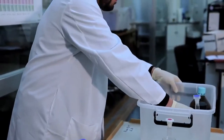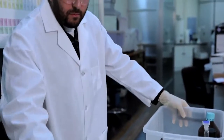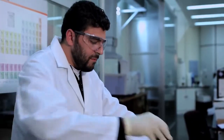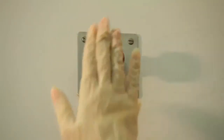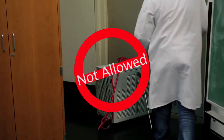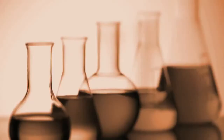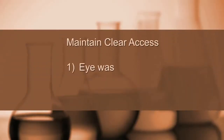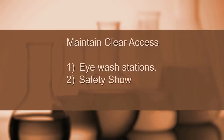Store or dispose of chemicals not being used, especially flammable or combustible liquids or reactive materials. Emergency personnel must have clear access to electrical breakers and panels. Maintain clear access to emergency equipment, such as eyewash stations, safety showers and fire alarm pull stations.